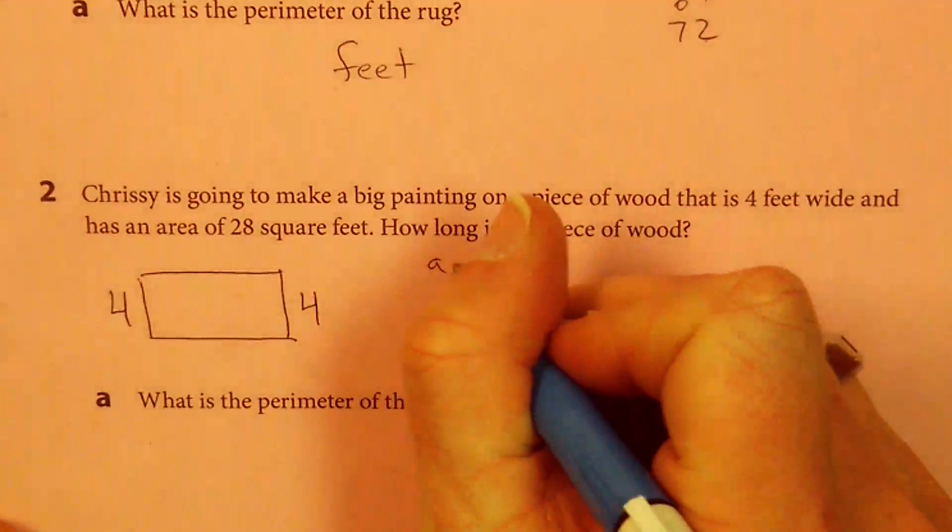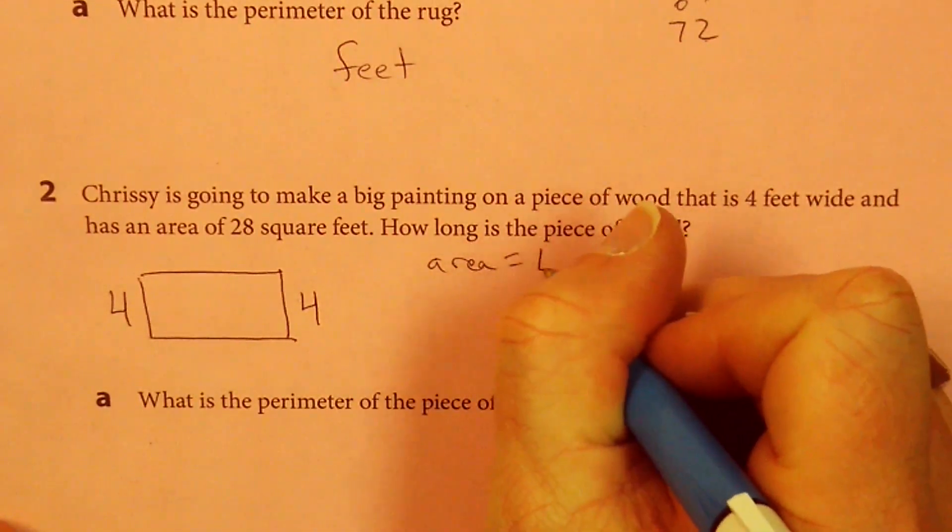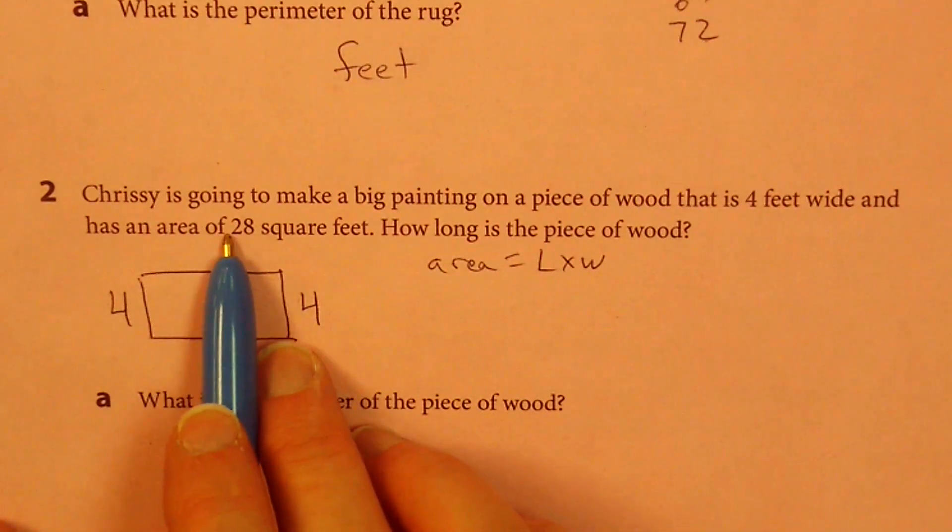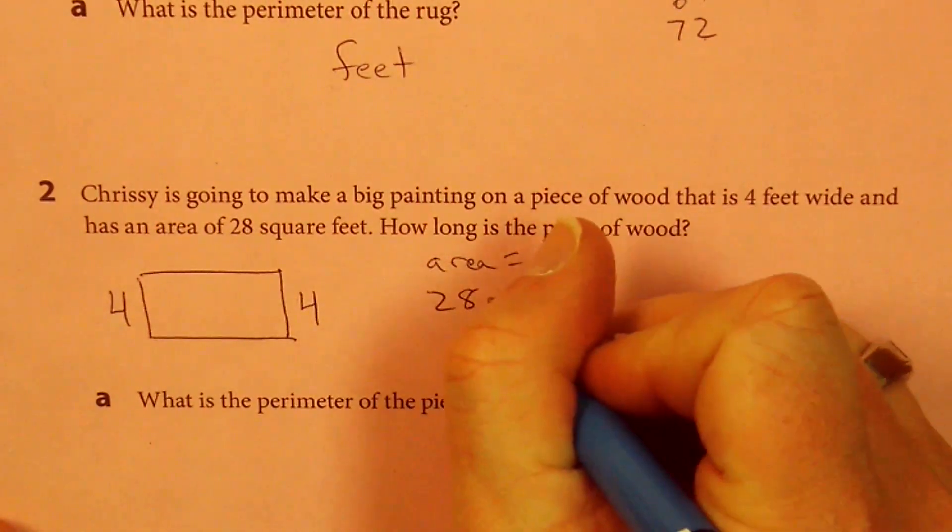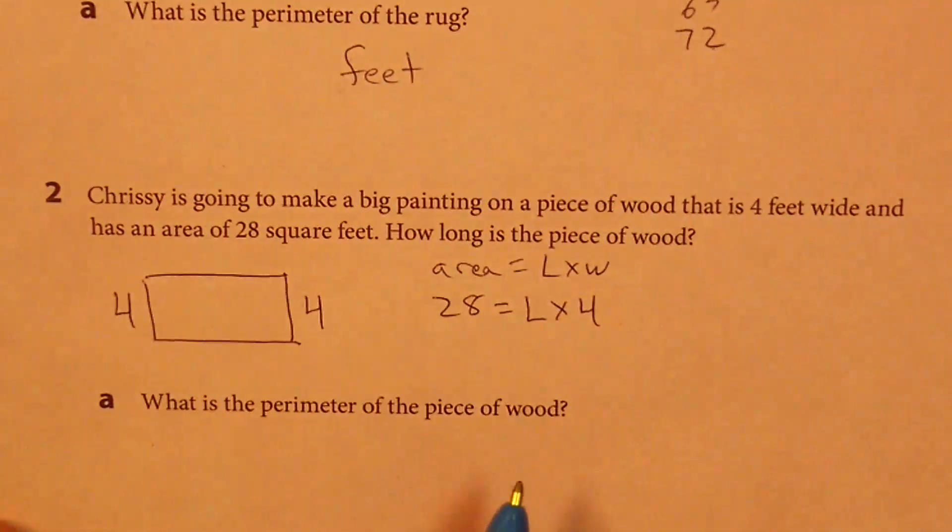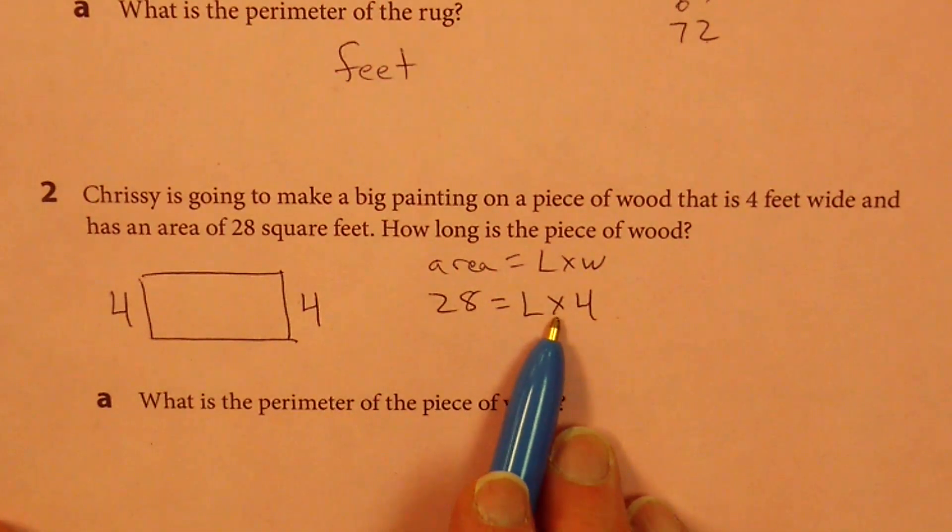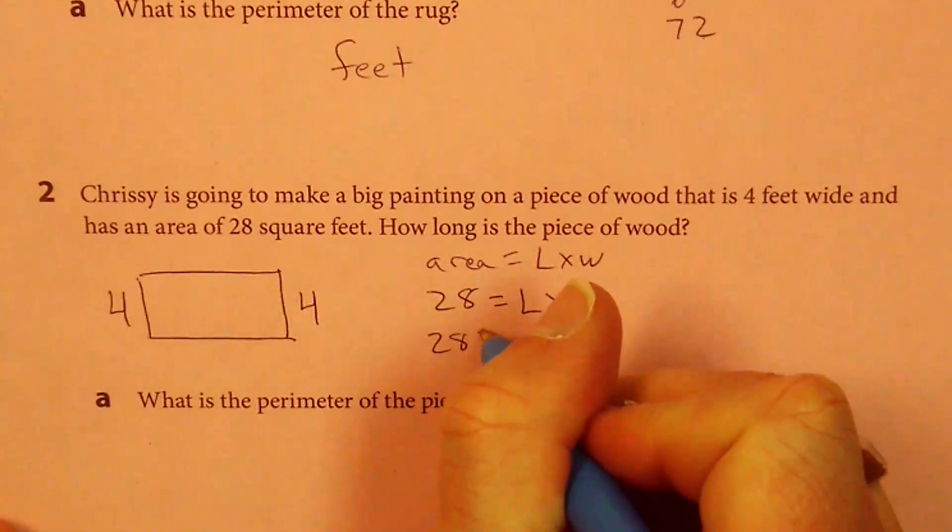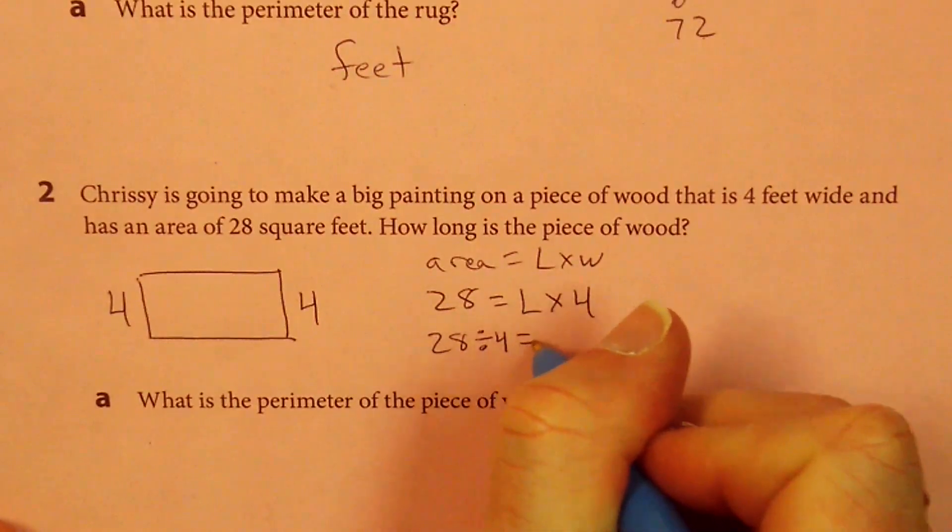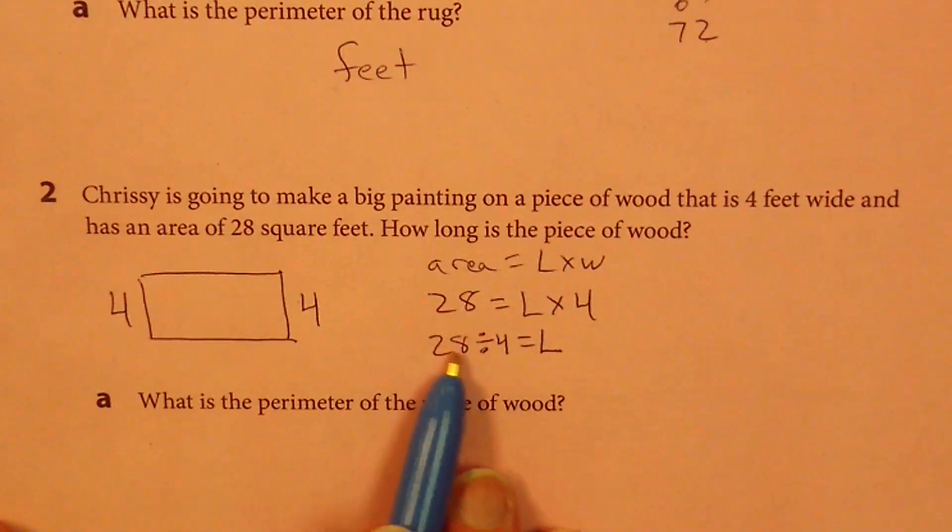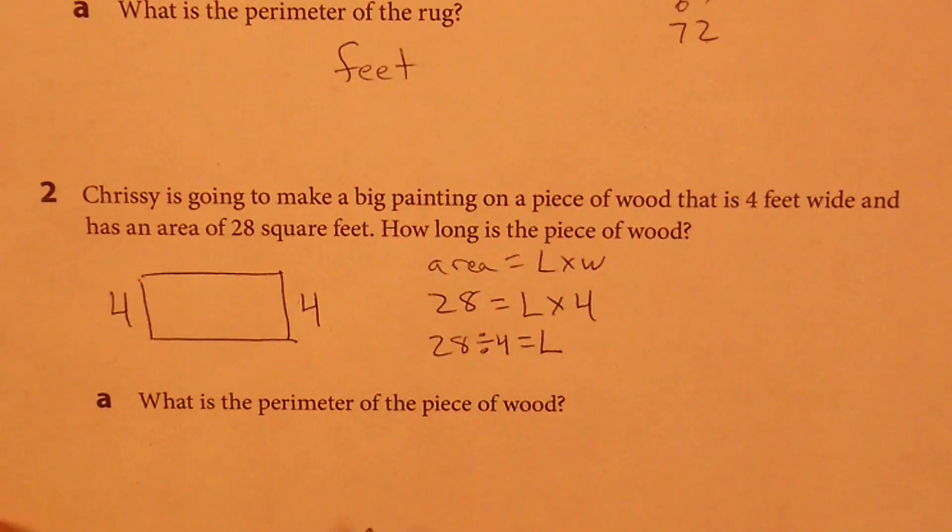What is area? Area is length times width, which is what we just talked about. It gave us the width and it gave us the area. So 28 is length times 4, right? If I wanted to flip this around, I could say 28 divided by 4 equals the length. If I broke 28 into 4 equal pieces, what would it be?